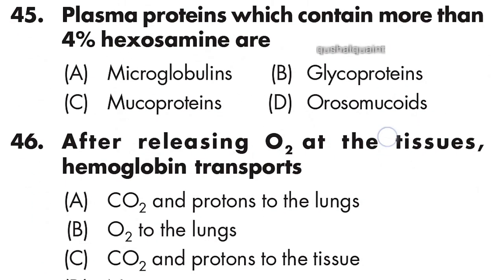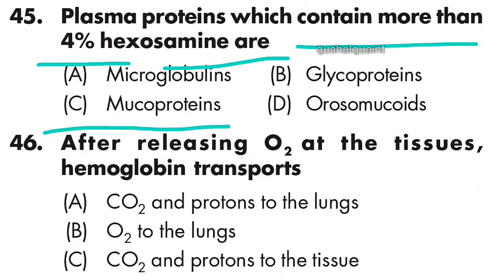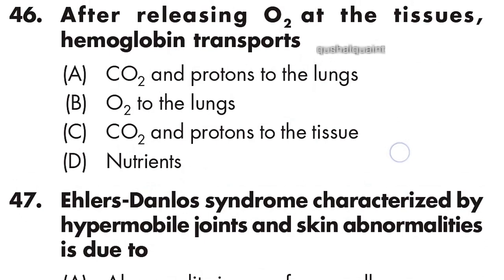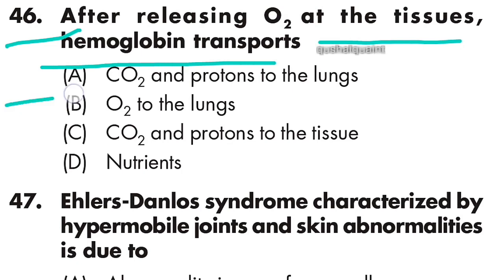Question 45: Plasma proteins which contain more than 4% hexosamine are — option C is right — mucoproteins. Question 46: After releasing O2 at the tissues, hemoglobin transports CO2 and protons to the lungs — option A is right.